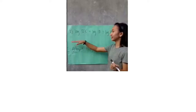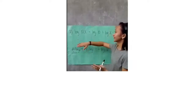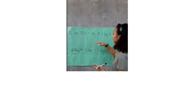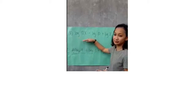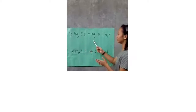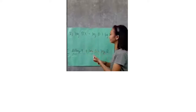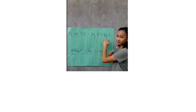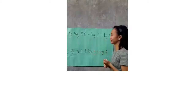Let's move on to example number 2, which is logarithm of 10 times x. We will perform the product rule. It will become logarithm of 10 plus logarithm of x, simply as that.